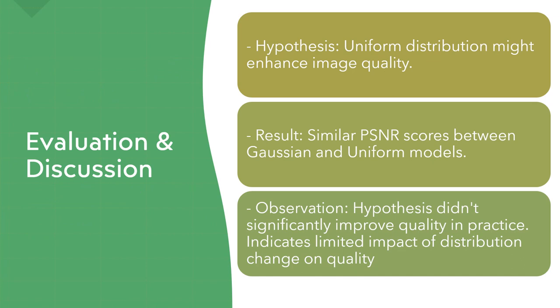My hypothesis was that the uniform distribution might enhance the image quality, since the dataset that I was utilizing was a CelebA dataset, which is basically a dataset that contains a lot of faces, and the algorithm was trained with this data. My hypothesis was that since faces mostly share the same color of pixels, using a uniform distribution might enhance the quality of the creation of the image.